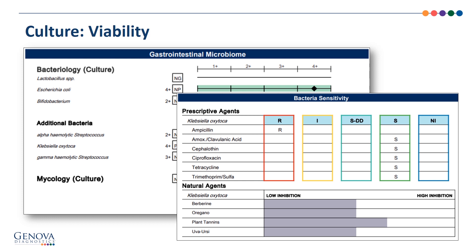The definitions for each of these columns are at the bottom of the report. With the natural agents, as long as the gray bar reaches the halfway mark, it is considered an effective agent. So in the example shown here, all four natural agents would be effective, with the plant tannins being more effective because it's closer to the right in the higher inhibition area.